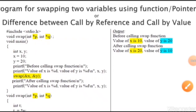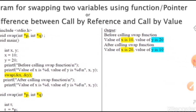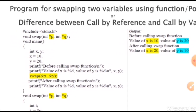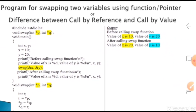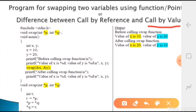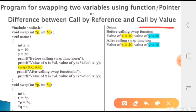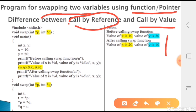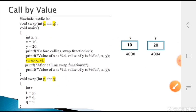Now we will study a program for swapping two variables using functions and pointers. You may also get this as a question asking for the difference between call by reference and call by value - the program remains the same with a slightly different question. We will first study call by value, then study call by reference - first how we should not do it, then how to do it.